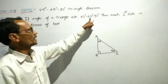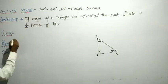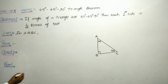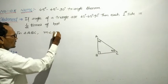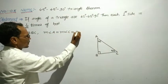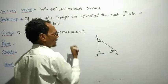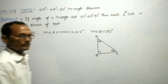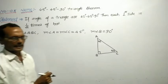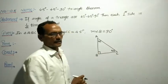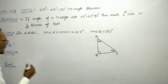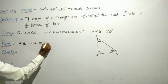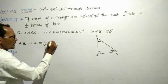As per the statement, the three angles are like this. So I can write: in triangle ABC, measure of angle A equals measure of angle C equals 45 degrees, and measure of angle B equals 90 degrees. Then, each perpendicular side — that is, the side which forms the right angle — therefore AB equals BC equals 1 by root 2 times the hypotenuse.